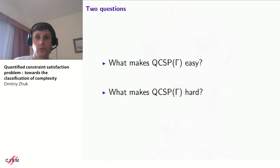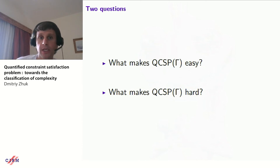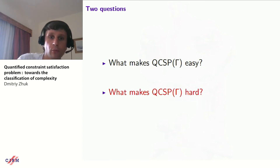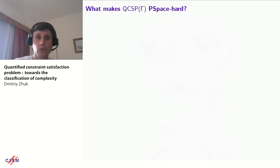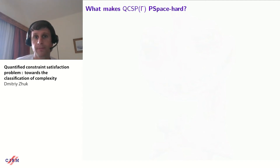Let's go back to our two questions: what makes the problem easy and what makes it P-space-hard? For easiness, I showed you the PGP reduction, which reduces complexity to NP. But now we know we need something else, because we have constraint languages for which the problem is tractable but not PGP. For P-space hardness, I want to show you a constraint language for which I will prove P-space hardness, and I claim this is the most general proof of P-space hardness — any other constraint language for which the problem is P-space-hard can be reduced to this one.